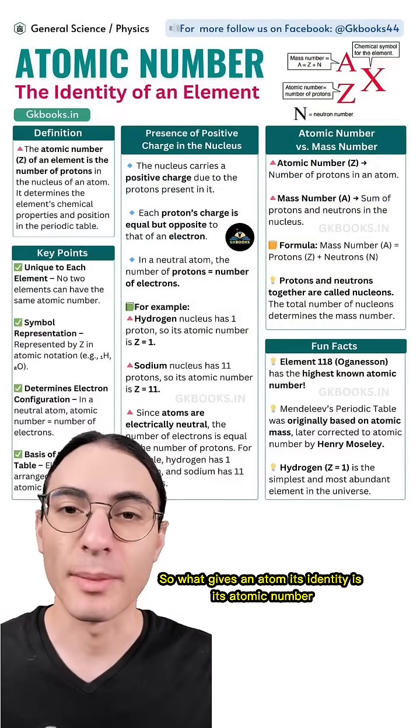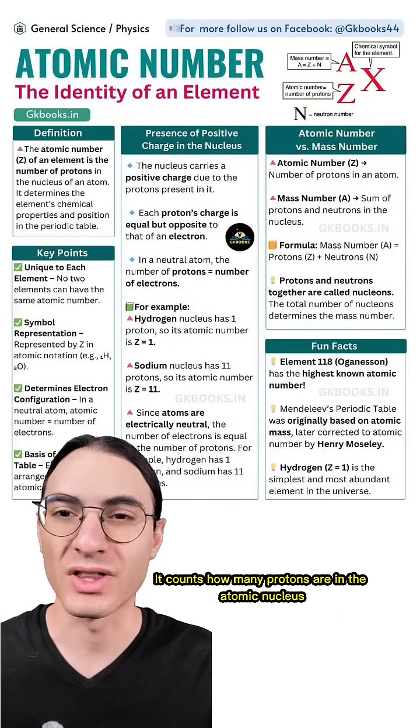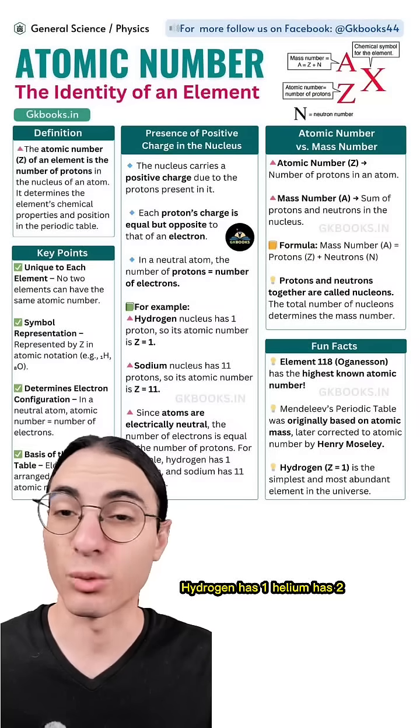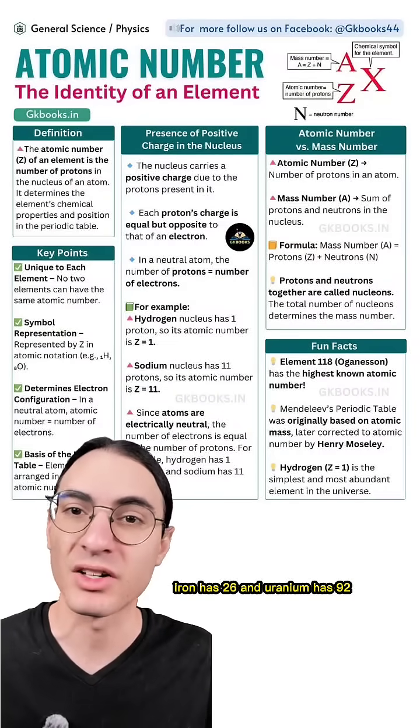What gives an atom its identity is its atomic number. It counts how many protons are in the atomic nucleus. Hydrogen has one, helium has two, iron has 26, and uranium has 92.